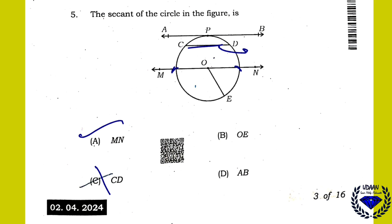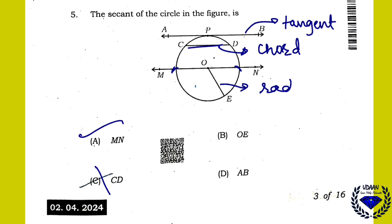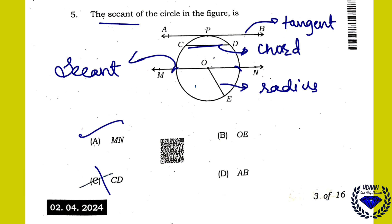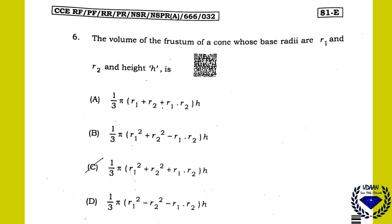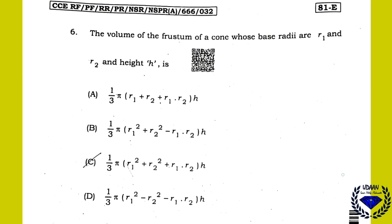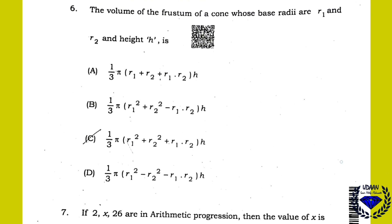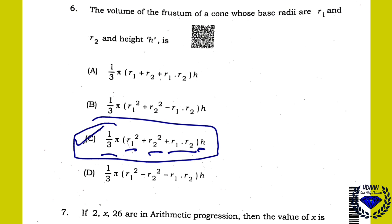CD is the chord, AB is the tangent, OE is the radius, and MN is the secant. Question 6: The volume of a frustum of a cone whose base radii are R1 and R2 and height H is V = (1/3)πH(R1² + R2² + R1·R2). So option C is the right answer.